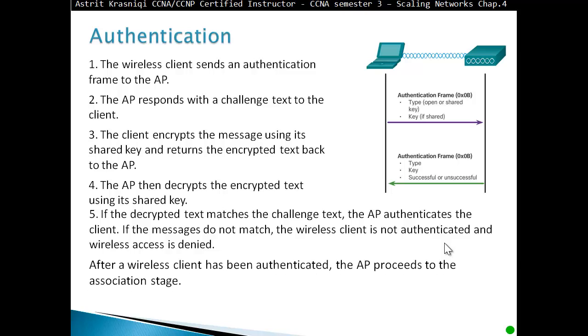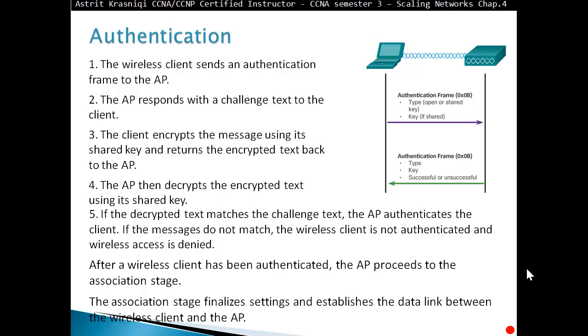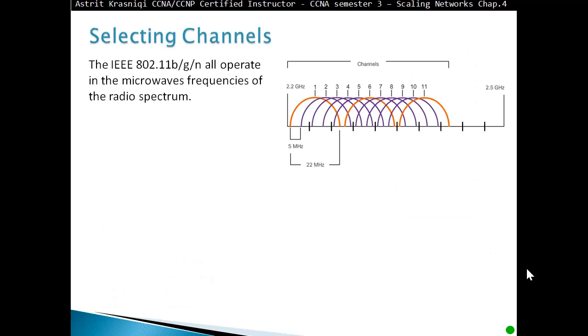After the wireless client has been authenticated, the access point proceeds to the association stage. The association stage finalizes the settings and establishes the data link between the wireless client and the access point.